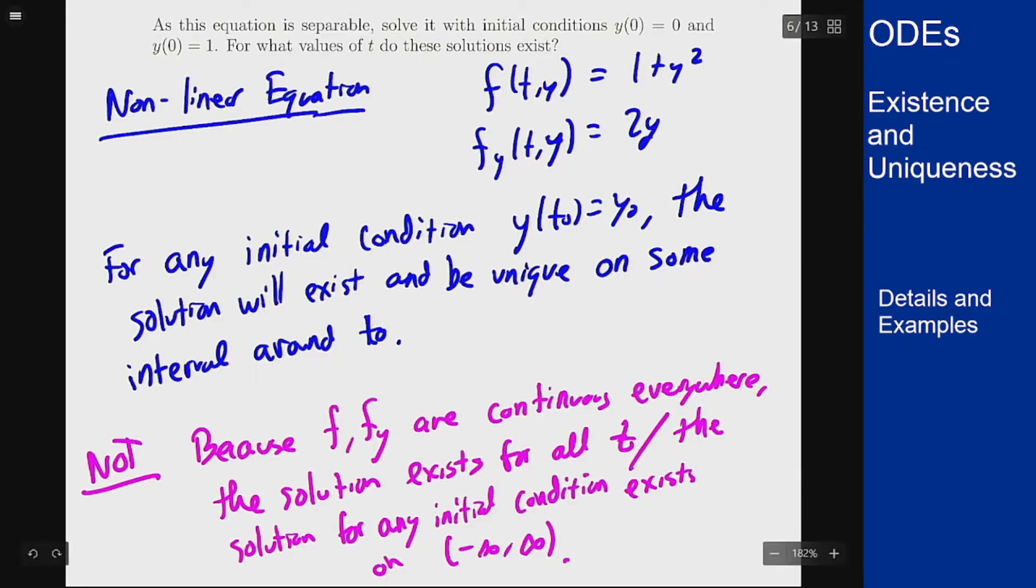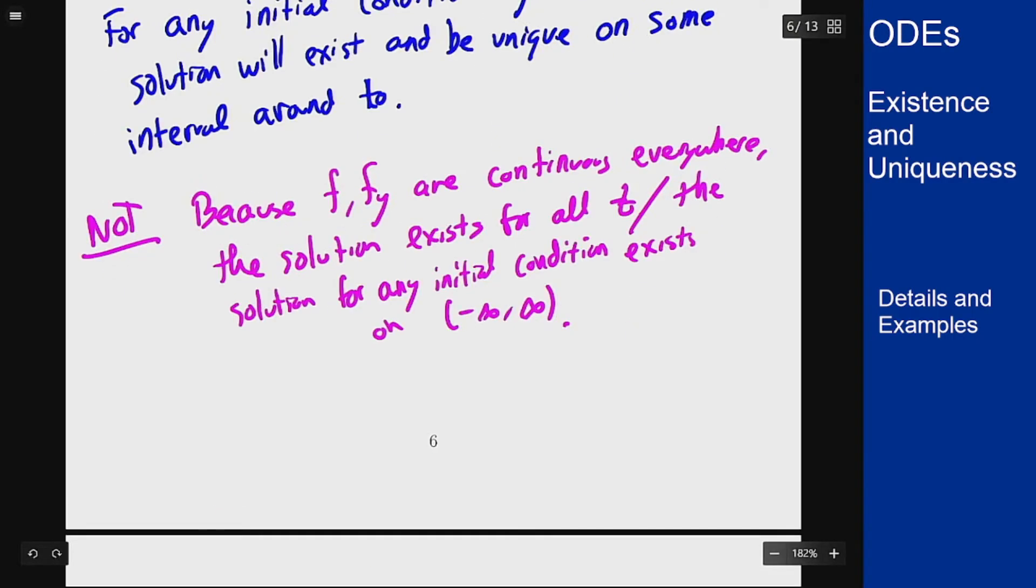The nonlinear theorem says the first version: it will exist on some interval around that point even if they're defined and continuous everywhere. And let's see why this problem breaks that. I'm going to cross this out now so we know that's not right and we'll see why. We'll do that by solving the equation.